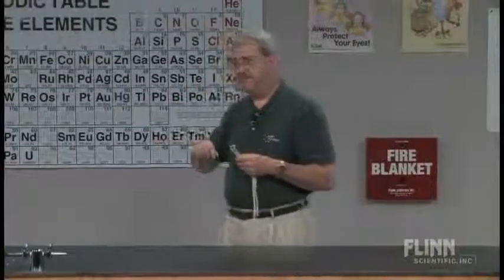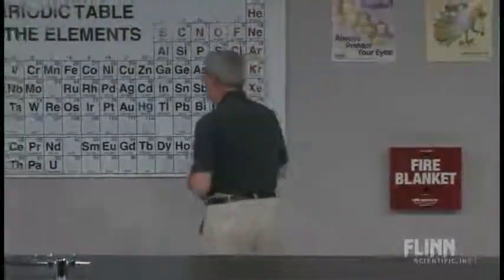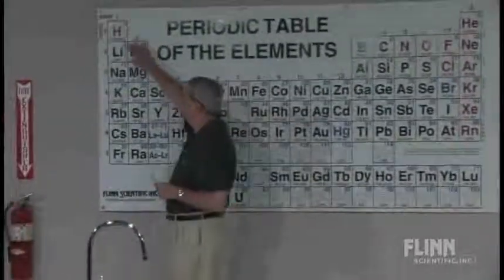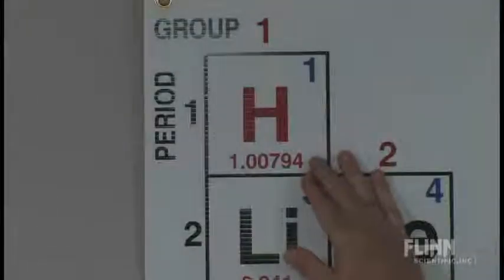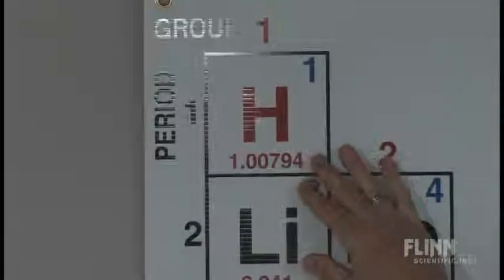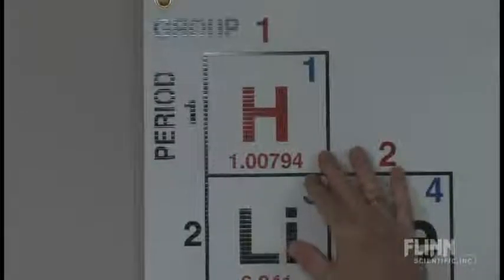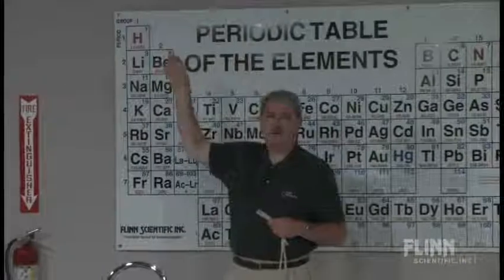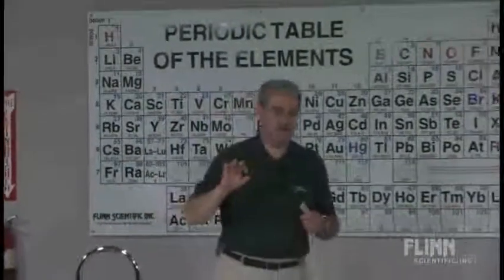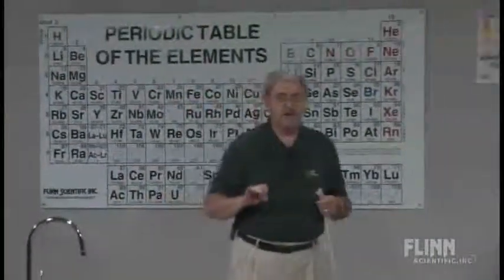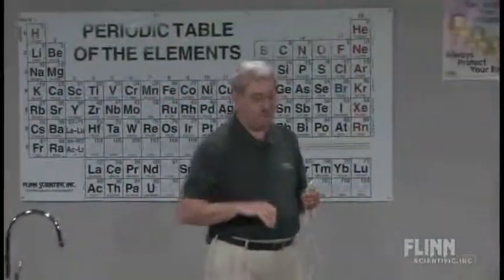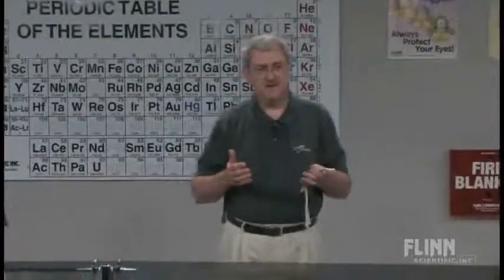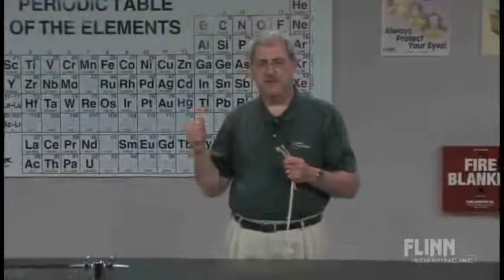Take the element hydrogen as an example. Reported on the table is an average of 1.00794. There are in nature three isotopes: two are naturally occurring and one is radioactive. The average value of all of those is what's reported on the periodic table.